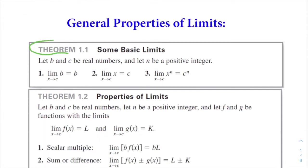Theorem 1.1 covers some basic limits. Let b and c be real numbers and n be a positive integer. Number 1: the limit as x approaches c of b equals b — the output is simply the constant. If b is a constant function, like y equals 4, no matter what value you pick the output is always 4. Similarly, the limit as x approaches c of x is simply c.